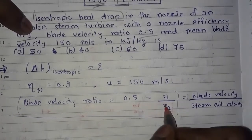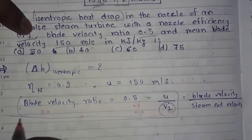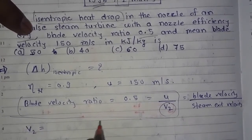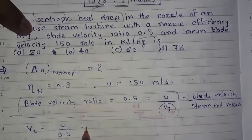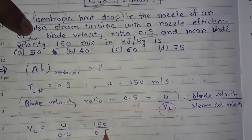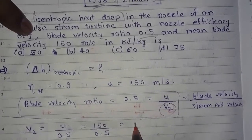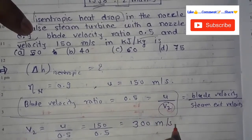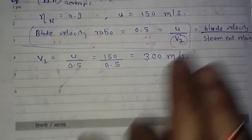From this we can calculate v2, the steam exit velocity. v2 is equal to u upon 0.5, which is 150 meter per second upon 0.5. After calculating, we get v2 equal to 300 meter per second.